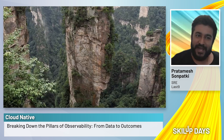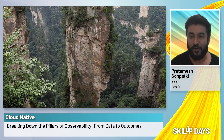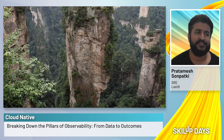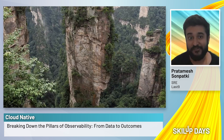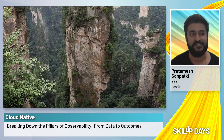Observability is the ability to measure the internal state of the system by examining its outputs from the outside. A system is considered observable if the current state can be estimated by only using the information from the outputs that can be inferred from the system. It tells us what is wrong and, more importantly, why it is wrong.